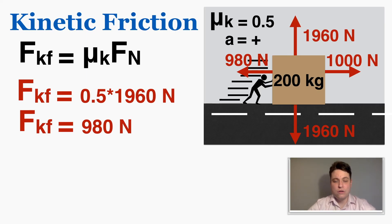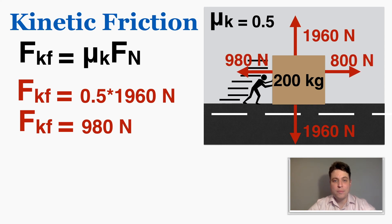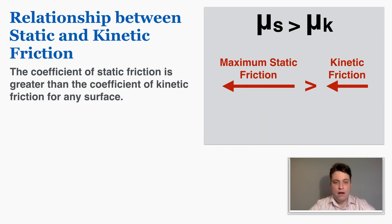If you push with exactly the kinetic friction force, the object moves at a constant rate with no acceleration. Push harder and the object accelerates, getting faster and faster. Push with less force than kinetic friction and the object slows to a stop because friction is pushing it back. One important fact: the coefficient of static friction is always greater than the coefficient of kinetic friction for any surface.